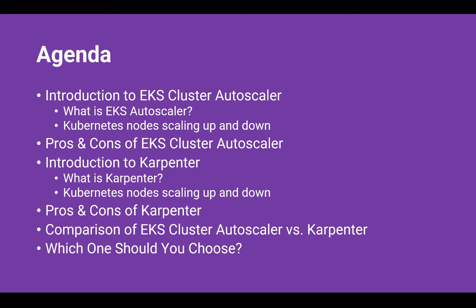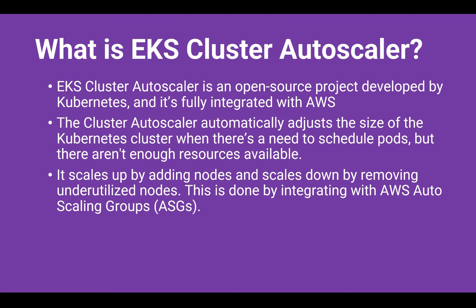Let's start with the AWS EKS Autoscaler. If you are using Kubernetes on AWS, you've probably come across this tool. The EKS Autoscaler is an open source project developed by Kubernetes and it's fully integrated with AWS. The cluster autoscaler automatically adjusts the size of a Kubernetes cluster when there is a need for scheduling pods, or when there are not enough resources available.